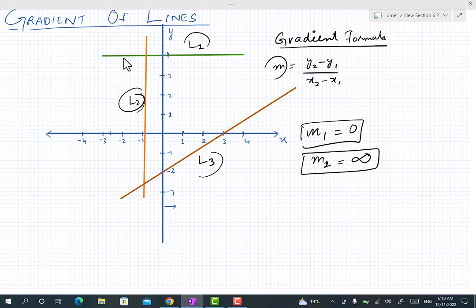Now the third line is in between L1 and L2; it is neither horizontal nor vertical. The line which is in between horizontal and vertical has a slope value that is calculated by the formula m equals y2 minus y1 over x2 minus x1, which is written right here. How to calculate this? What are y2, y1, x2, and x1? These are the coordinates of the two points that are on that line.